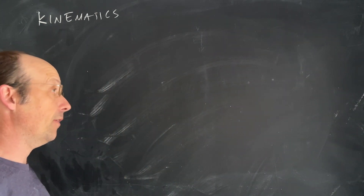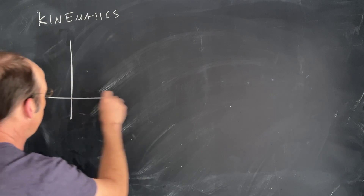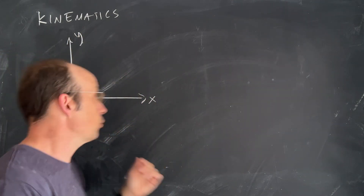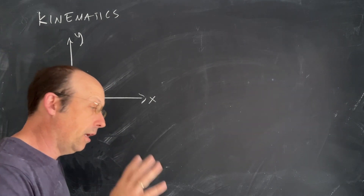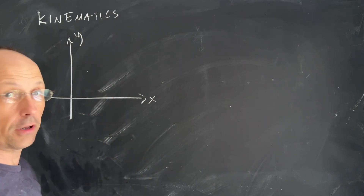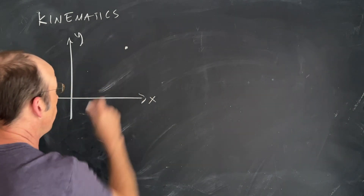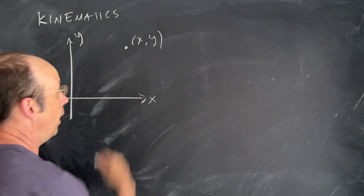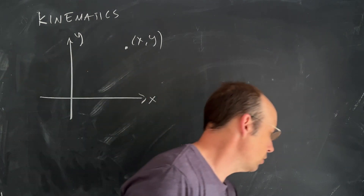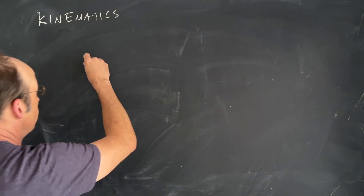Number one: the definition of displacement and position. So here we have some coordinate system x, y. There are actually three coordinate systems — we also have a z-axis. But pretty much everything we're going to do at the beginning can be done in two dimensions. I can define the location of an object as x, y, but we're going to deal with just one-dimensional motion here. We're just going to need an x-axis.